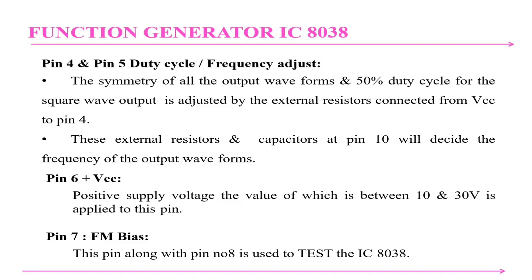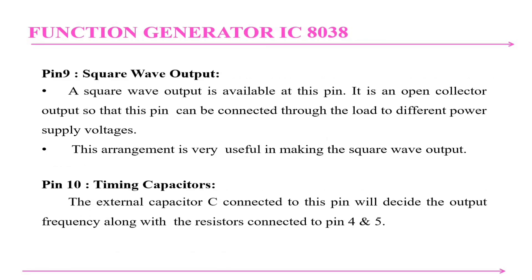The symmetry of all output waveforms and the 50 percent duty cycle of the square wave output is adjusted by the external resistors connected from VCC to pin 4. The external resistors and capacitors at pin 10 decide the frequency of the output waveform. Pin 6 is VCC, providing a positive supply voltage between 10 and 30 V applied to this pin. Pin 7 is FM bias, and this pin along with pin 8 is used to control the ICL8038.